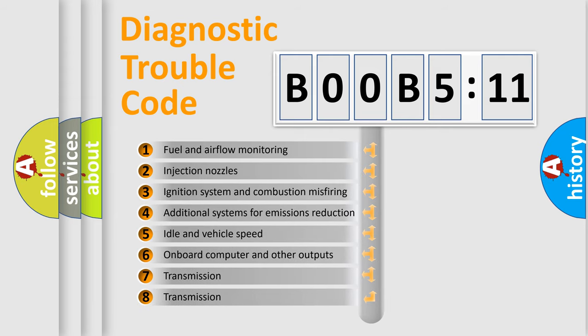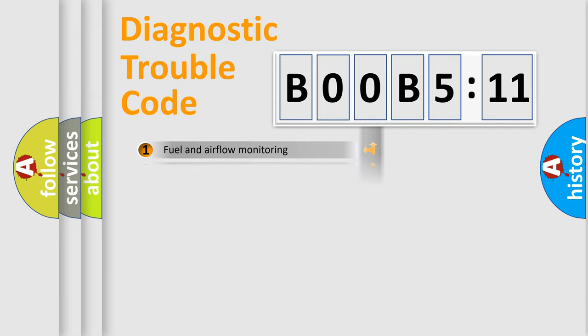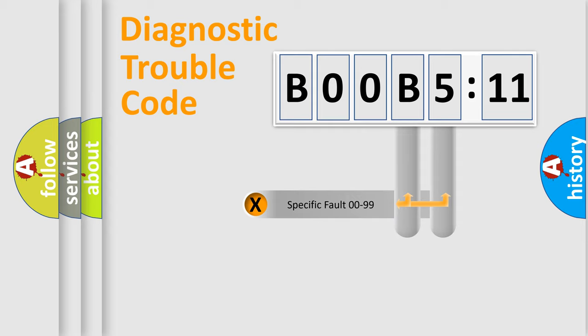The third character specifies a subset of errors. The distribution shown is valid only for standardized DTC codes. Only the last two characters define the specific fault of the group.